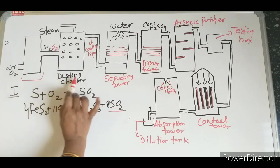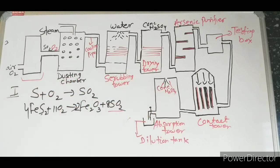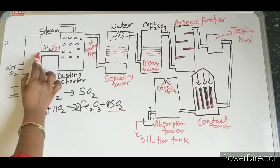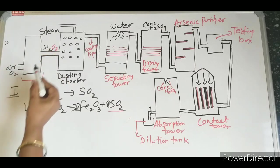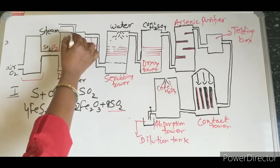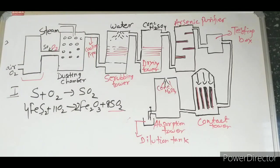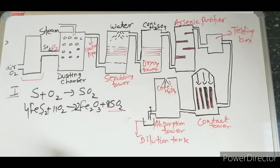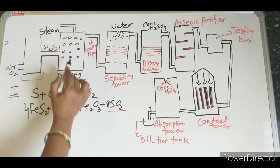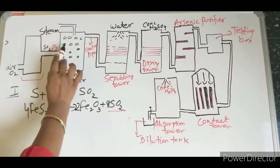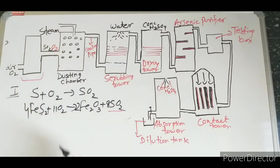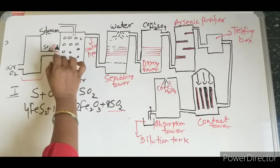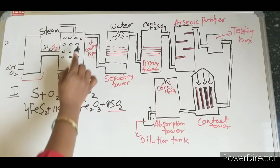The first purification stage is the dusting chamber. Sulfur dioxide passes through the dusting tower, where a downward flow of steam causes dust particles to absorb moisture and settle down. The hot SO2, along with some oxygen, then moves to cooling pipes, which cool the gases passing through.